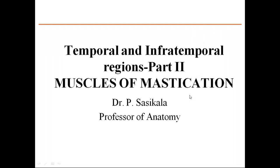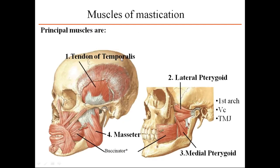We are seeing part 2 of the temporal and infratemporal region — muscles of mastication. The principal muscles of mastication are temporalis, masseter, lateral pterygoid, and medial pterygoid. All are derived from the first arch and are supplied by a common nerve — the third division of the trigeminal, that is the mandibular nerve, which supplies all four muscles.